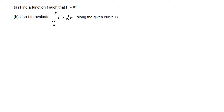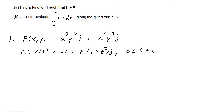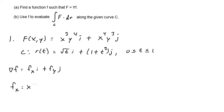For this next set of problems, part a asks us to find a function f such that the vector field equals the gradient vector. For number one, f(x, y) equals x cubed times y to the 4th times i plus x to the 4th times y cubed times j. So f sub x equals x cubed y to the 4th, and f sub y equals x to the 4th y cubed. We integrate f sub x with respect to x, getting x to the 4th over 4 times y to the 4th, and add g of y.